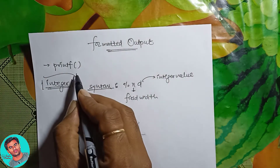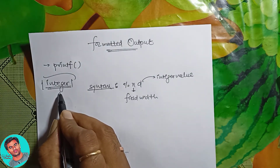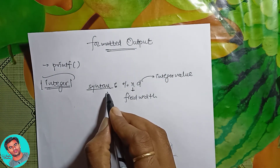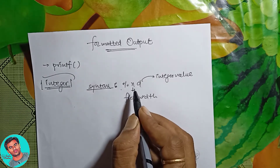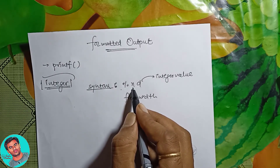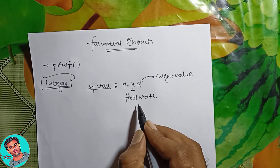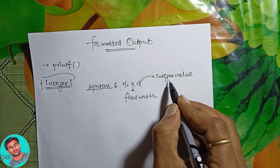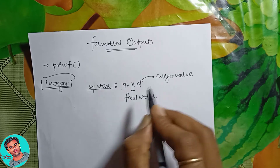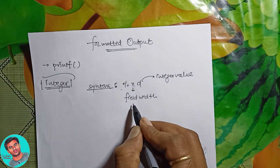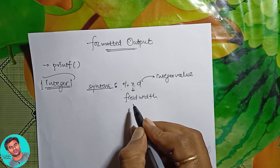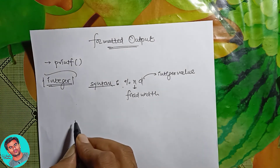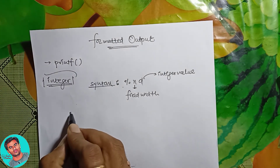We are working with a printf statement, and now we are going to discuss about integer formatted output. The syntax for an integer is %xd, where x represents the field width and d represents the integer value. This x is the field width, which shows the number of fields allocated for the output of an integer. I will show you how it is included in a printf statement.